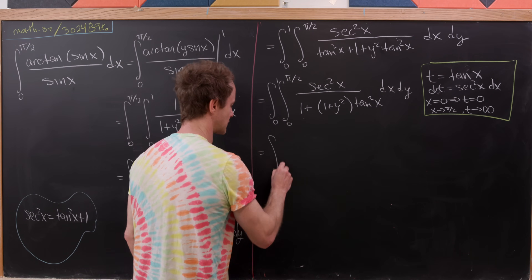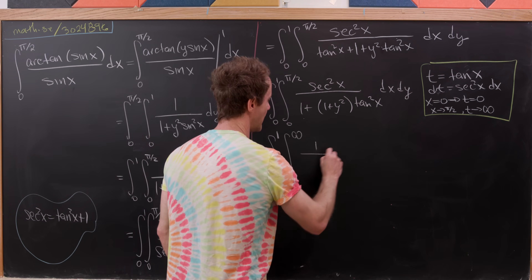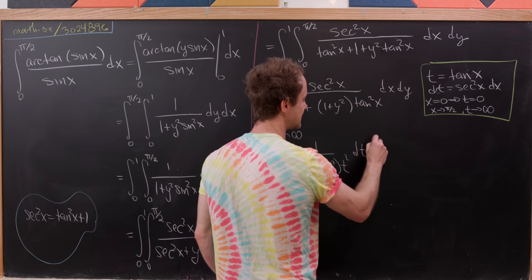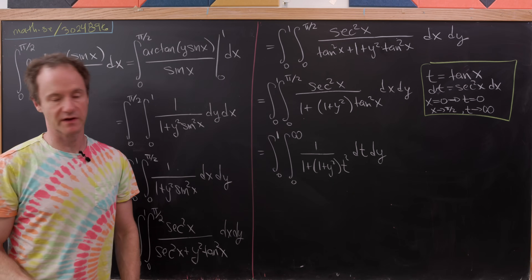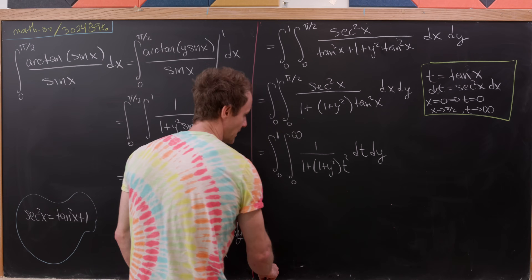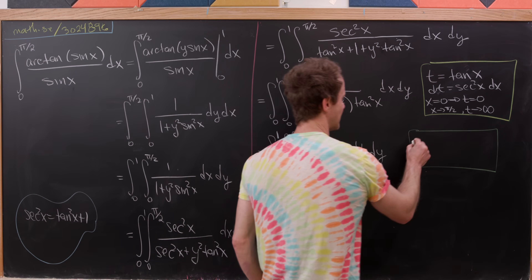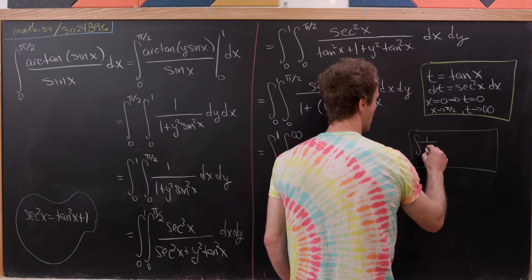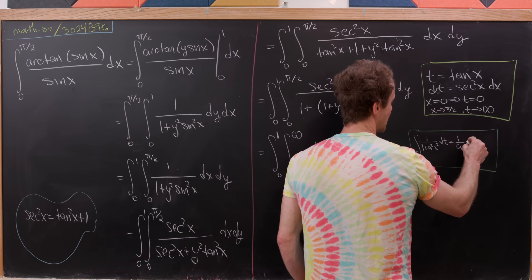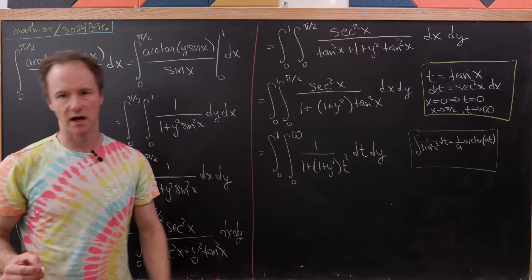We're now left with the integral from 0 to 1, then the integral from 0 to infinity, of 1 over (1 + (1 + y²) t²) dt dy. This is a well-known antiderivative form: the antiderivative of 1 over (1 + a² t²) dt is (1/a) arctan(a · t), plus a constant.